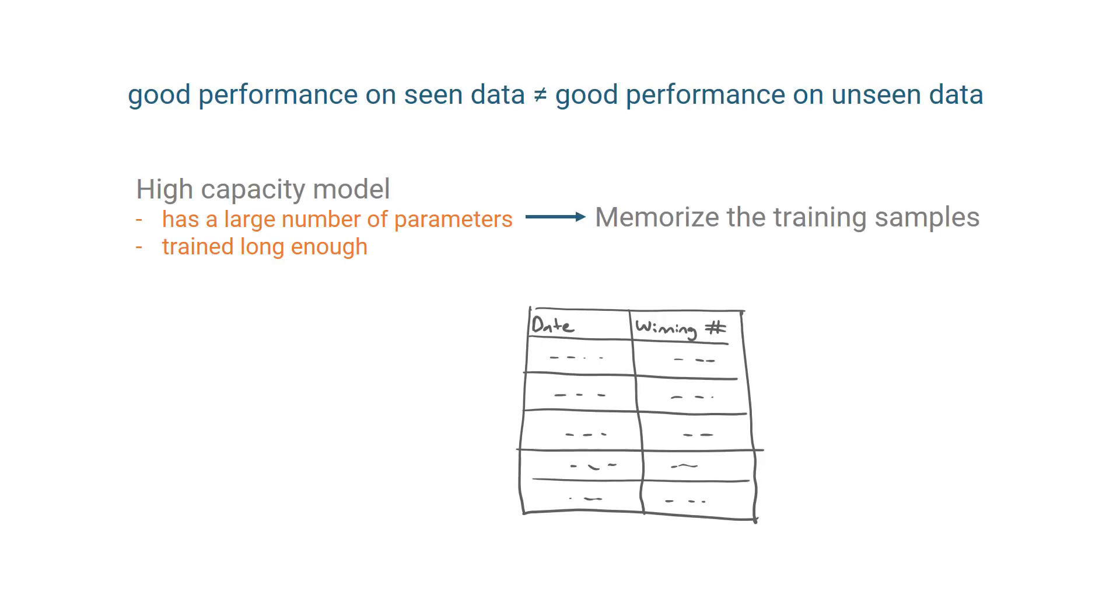If you train a high-capacity model on the historical data, where the inputs are the dates and the outputs are the winning numbers, the model can basically learn a lookup table that maps the inputs to the outputs without having any predictive power.